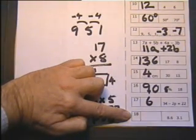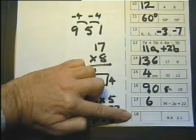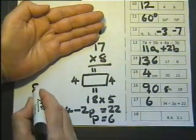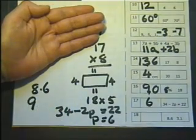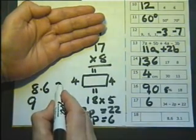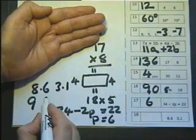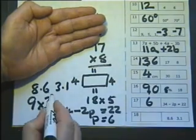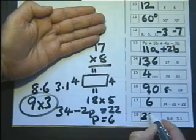Number 18: Estimate the value of 8.6 multiplied by 3.1. So the 8.6, let's think of that as 9. The 3.1, let's think of that as 3. Therefore our approximation is going to be 9 times 3 is 27.